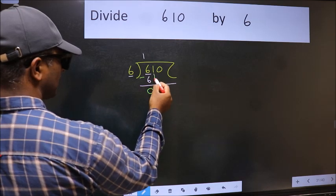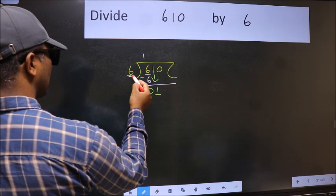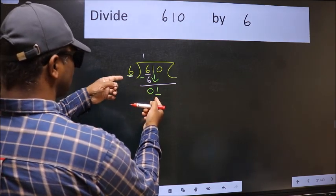After this, bring down the beside number. So 1 down. Now here we have 1 and here 6. 1 is smaller than 6.